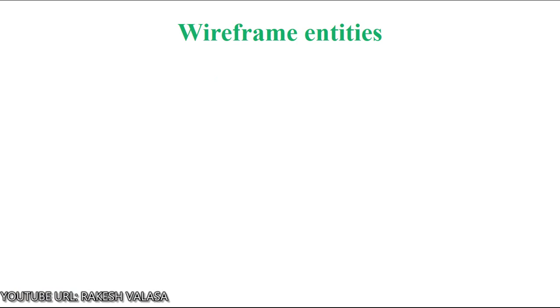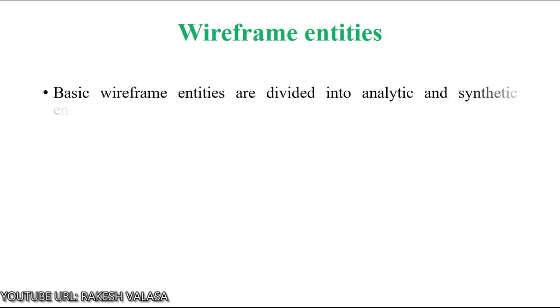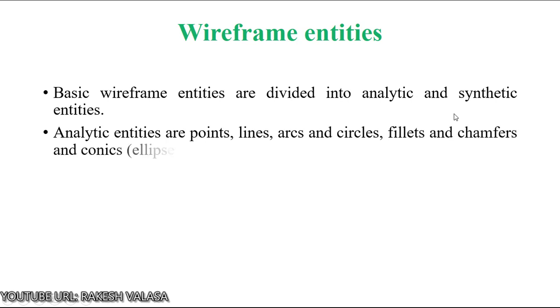Let us discuss what wireframe entities are and what different types of entities are available in CAD/CAM systems. All existing CAD/CAM systems provide users with basic wireframe entities. These wireframe entities are divided into two types: analytical entities and synthetic entities. Points, lines, arcs and circles, conics — meaning ellipses, parabolas and hyperbolas — come under analytical entities.